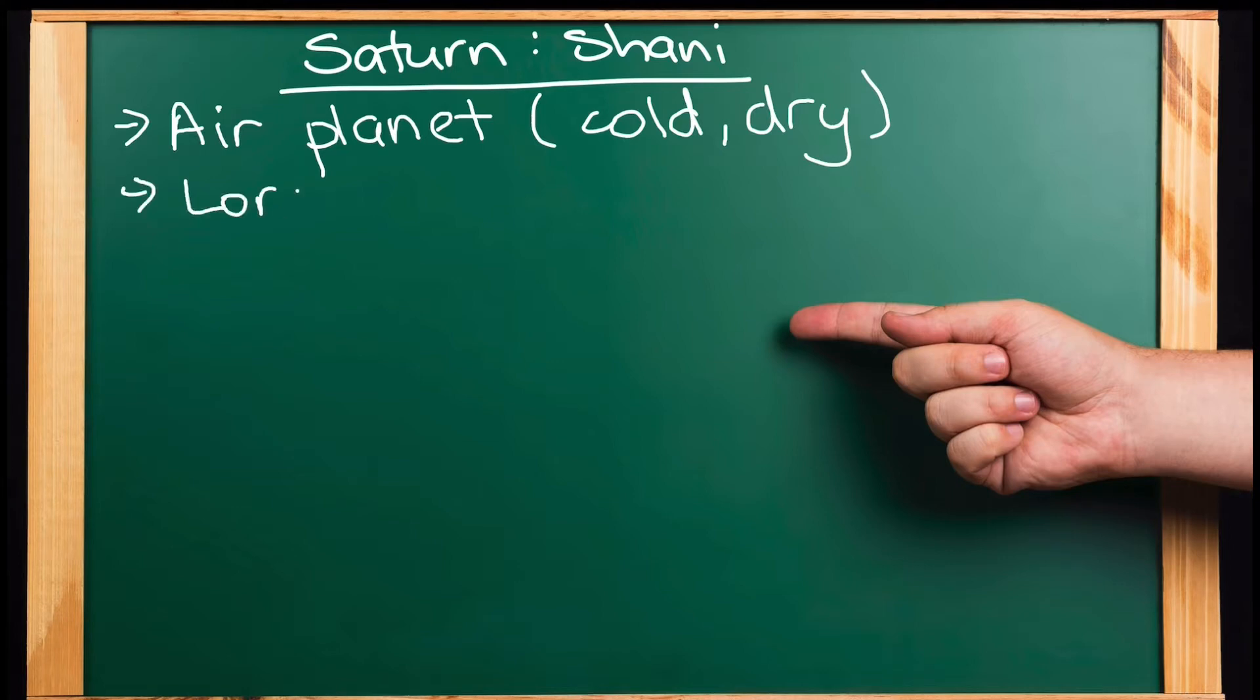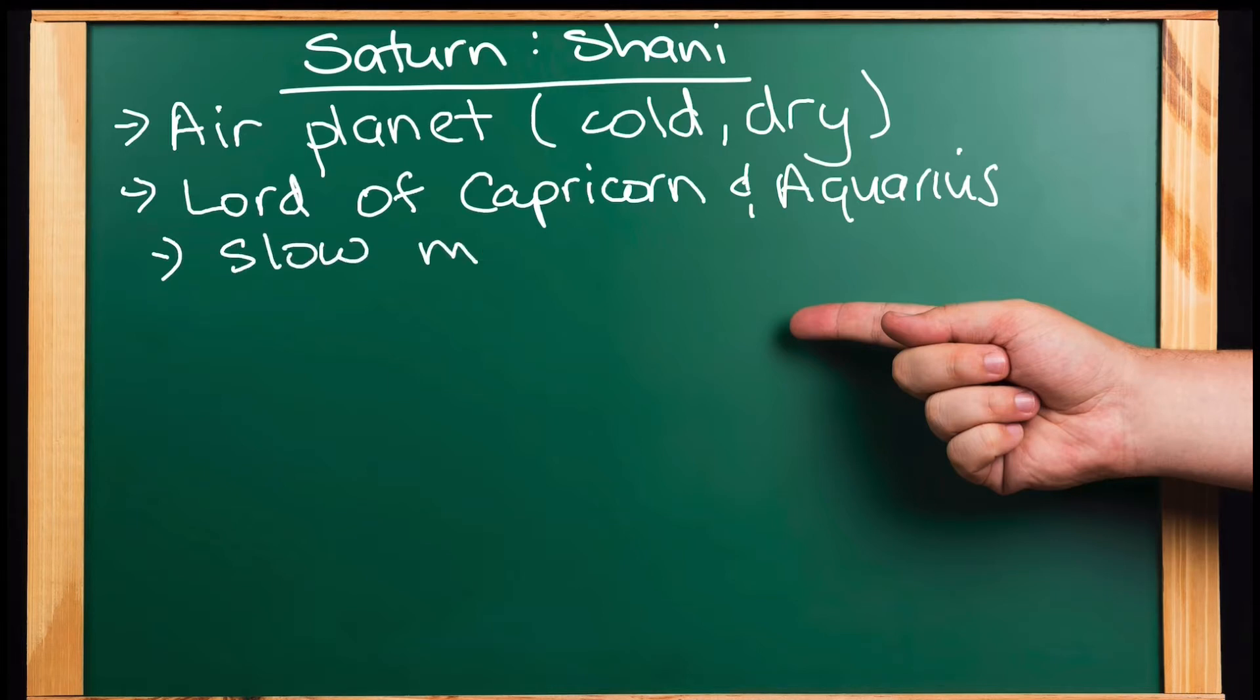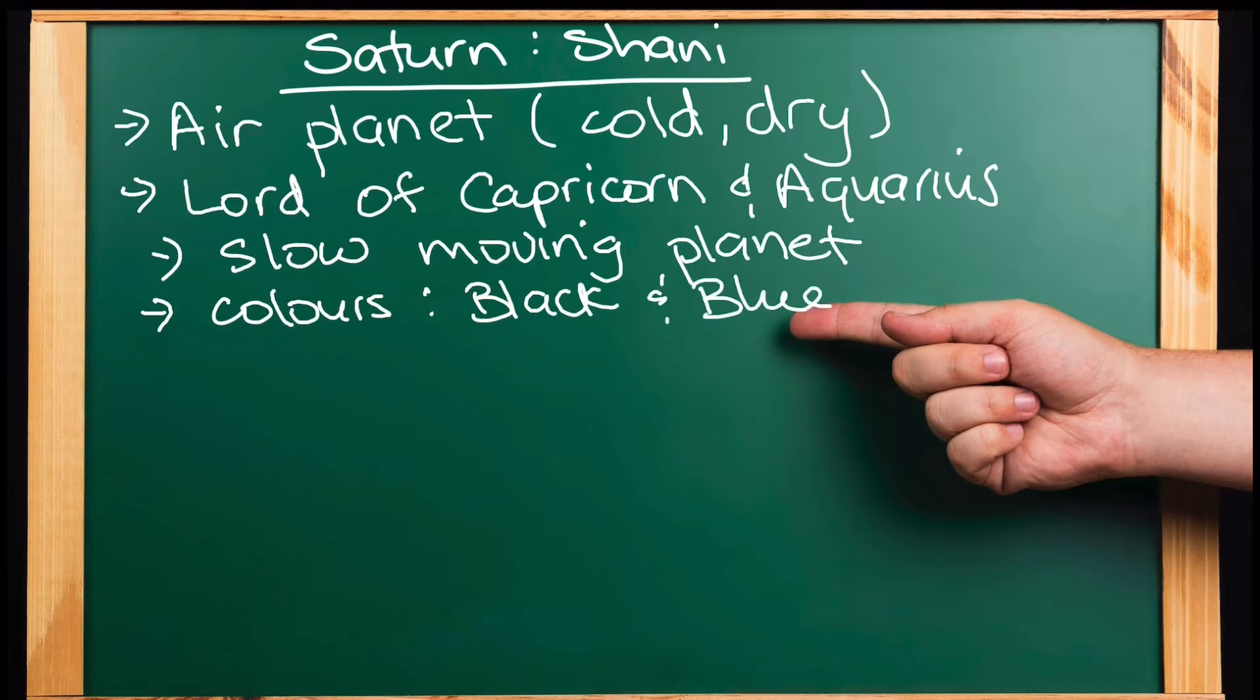Saturn is also Lord of Capricorn and Aquarius. And it is a slow moving planet and everything about Saturn is very, very slow and the colors that are representative of Saturn are black and blue. So if you're looking at any animals, then you're looking at like black dogs, black cats, black snakes. If you're looking at anything else as far as like the Earth, you're looking at black rock. A deep dark blue is also representative of Saturn.